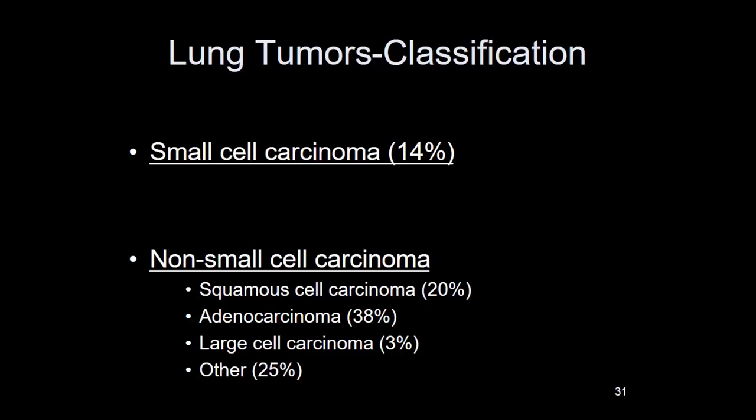Lung tumor classifications: the major division is small cell versus non-small cell. Small cell carcinoma has no meaningful subtypes — unless there's a mixed type such as adenocarcinoma with small cell, which is rare. Otherwise, small cell is small cell. These are high-grade tumors of neuroendocrine origin.